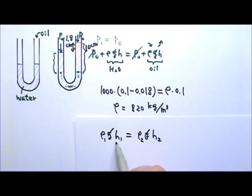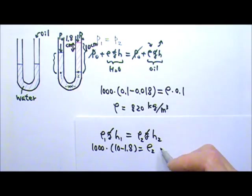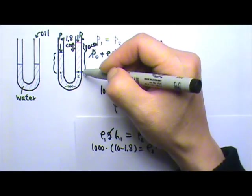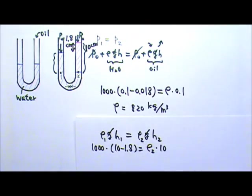If I use centimeters for the depth on this side, I just have to make sure I also use centimeters on that side. So I could have used a thousand times the h1 which is 10 minus 1.8 centimeters, and that equals to the density of the oil times the height of the oil column which is 10 centimeters. I would get exactly the same, the density of the oil is 820 kilograms per meter cubed.